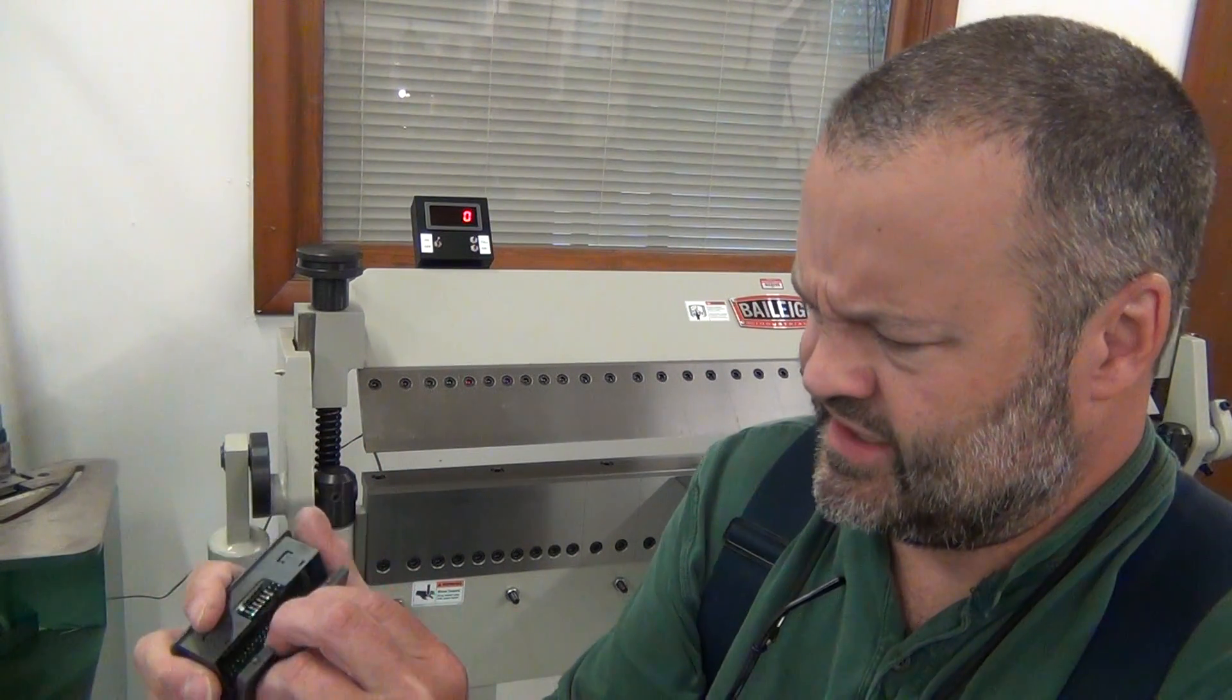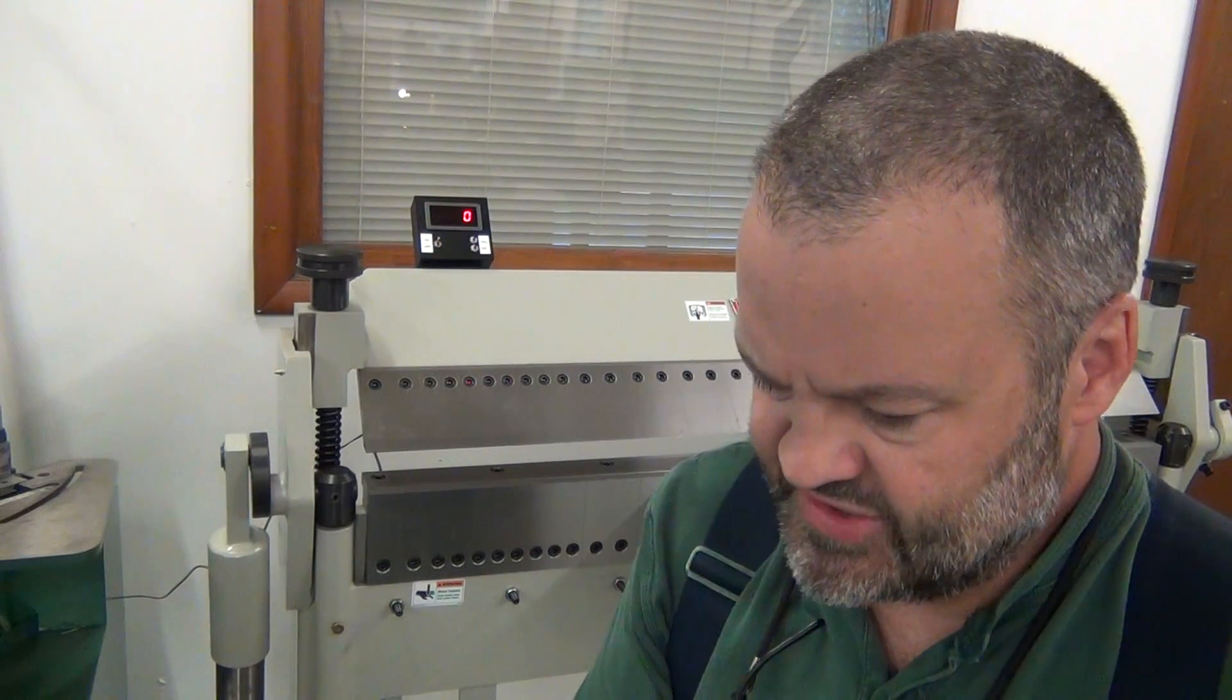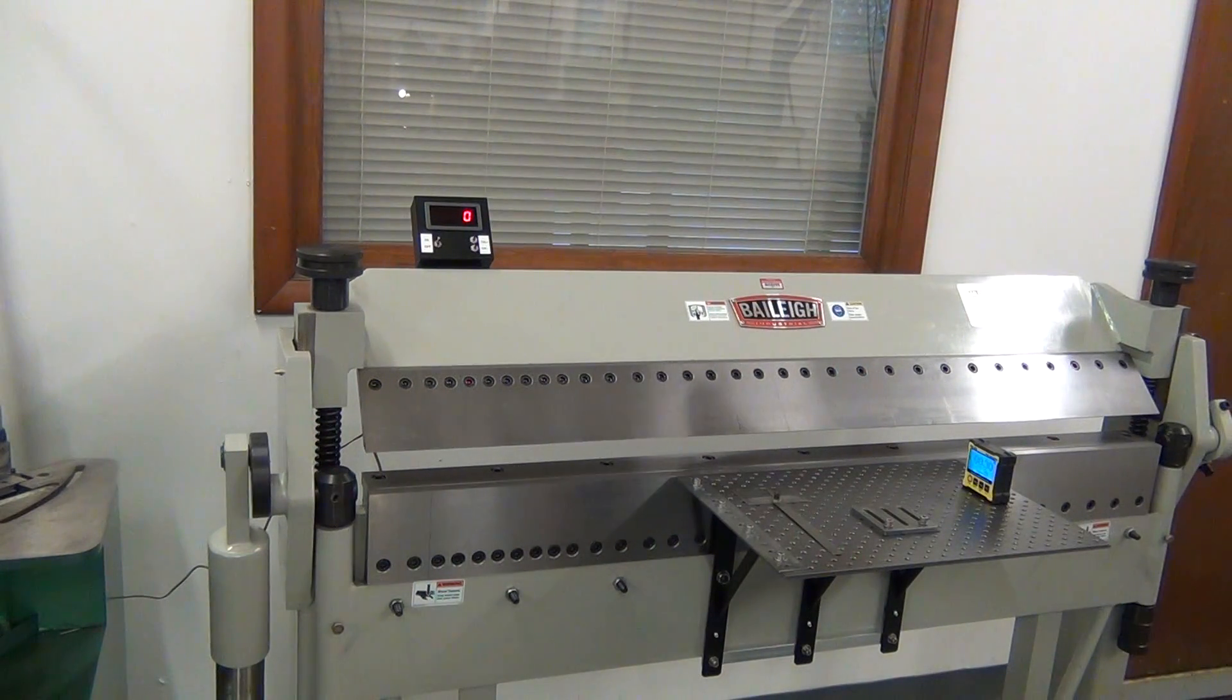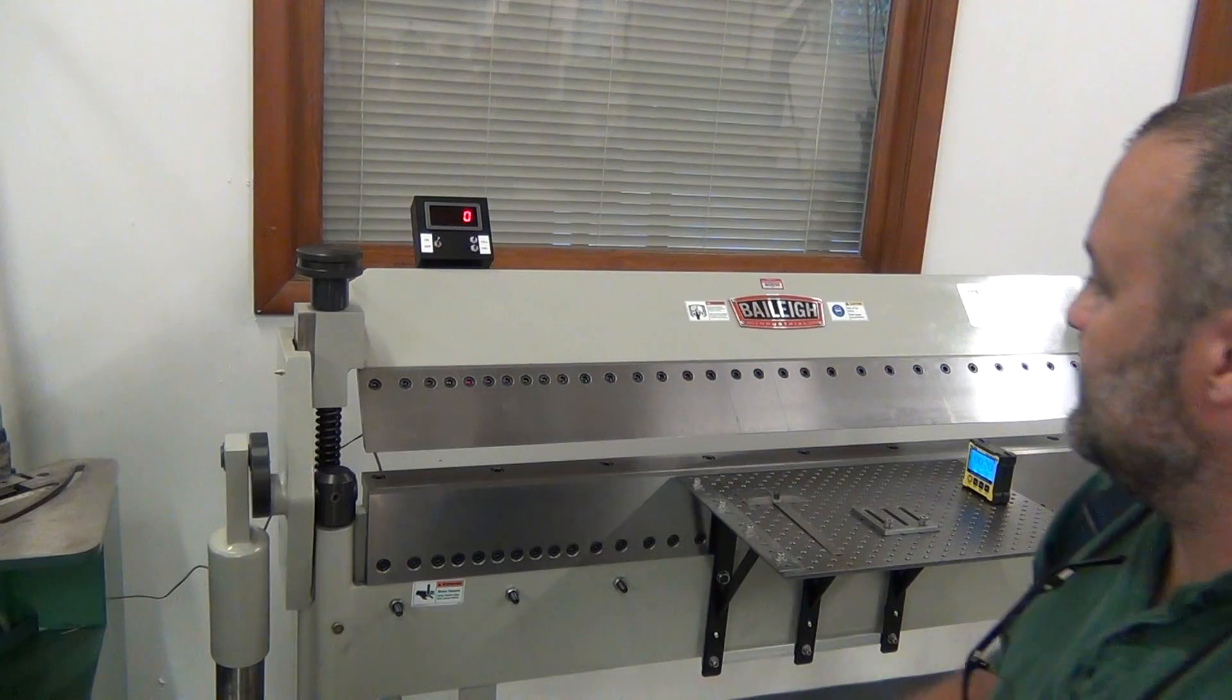And this display is very nice. This particular one has shift registers built in the back, so the Arduino is not bothered with the task of constantly strobing this display. You just shift out the segment values and it holds the last display you put up, so it makes a very bright and attractive display. These are about eight dollars—you can get those for about eight dollars or so on eBay.